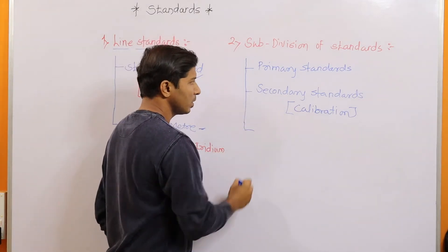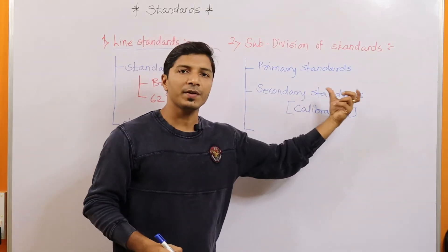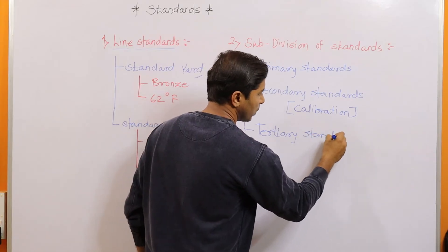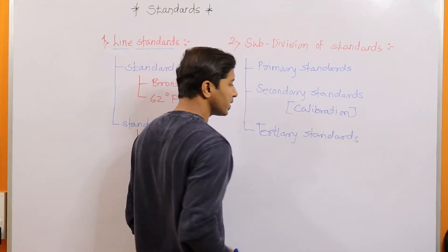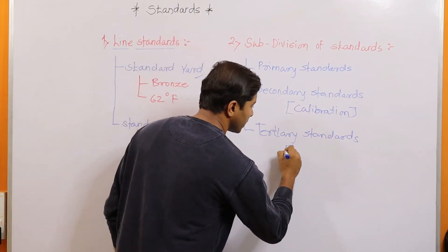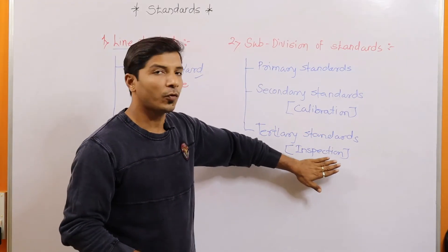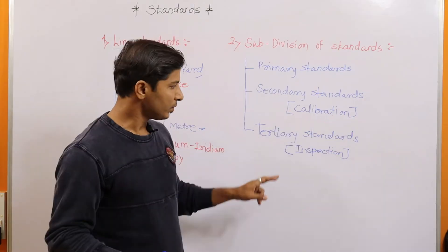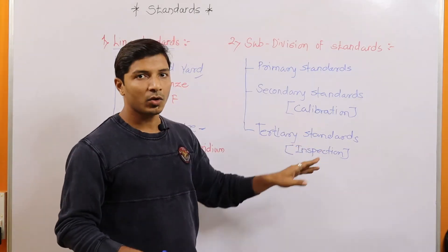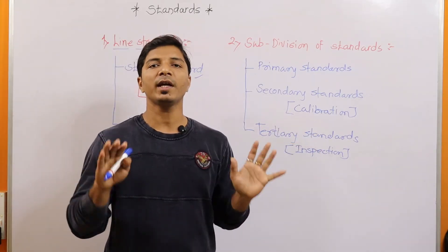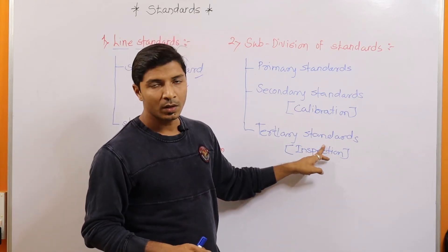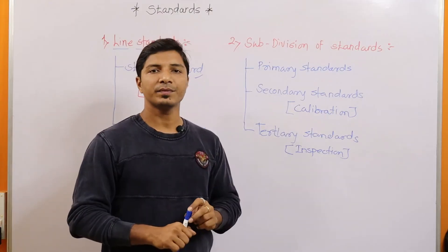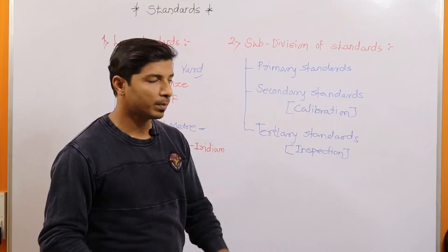By taking reference to secondary standards, tertiary standards are made. Tertiary standards can also be called inspection standards, as they are used for inspection purposes and can be frequently used in industries. Tertiary standards are not the instruments themselves, but at specific intervals they are used to check the accuracy of the working instruments.